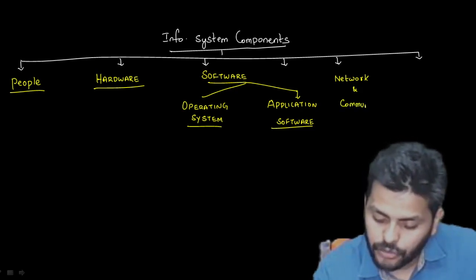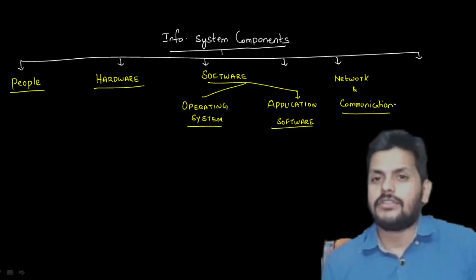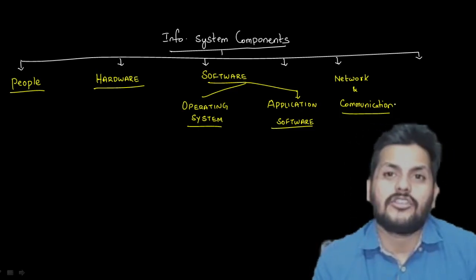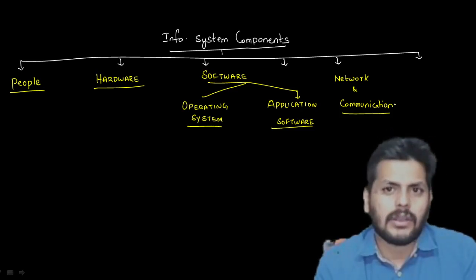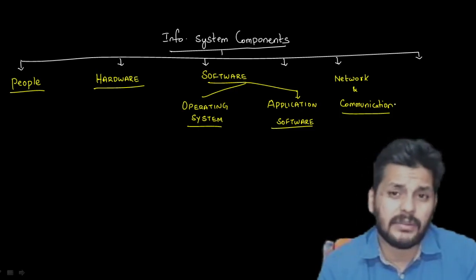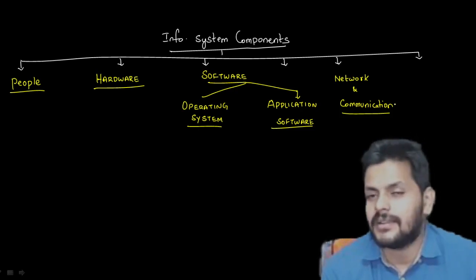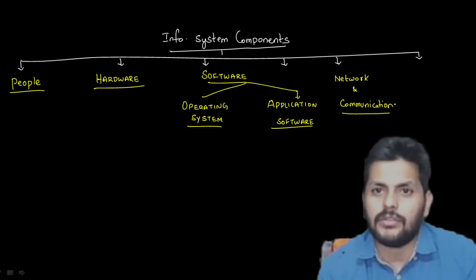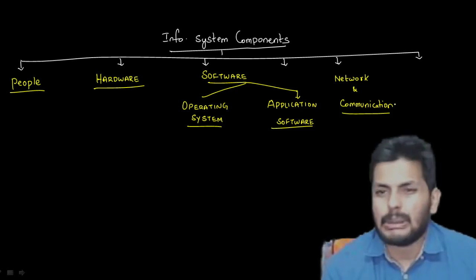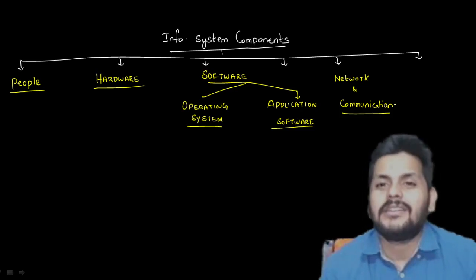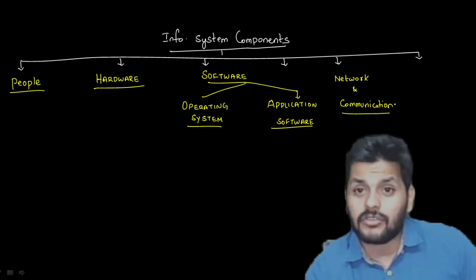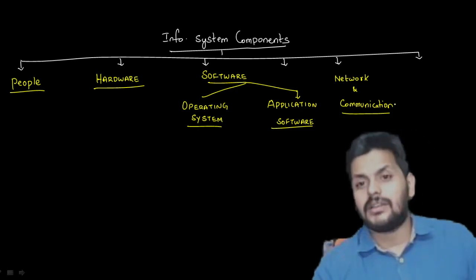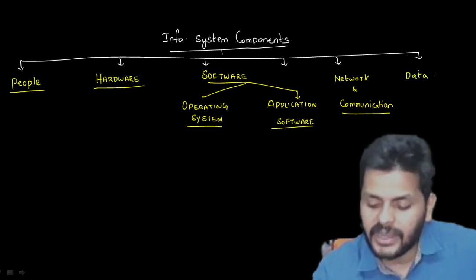Network and communication — otherwise everything will be stationary. Today even small kids won't respect a phone or tablet without internet connection. They want to go online and play games, use chat apps, play multiplayer games. Network connectivity is essential. From a business perspective, data is the most key aspect of an organization.